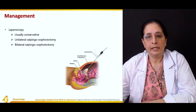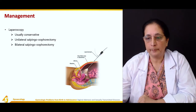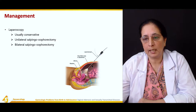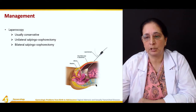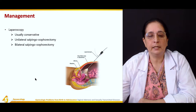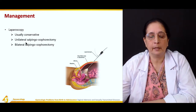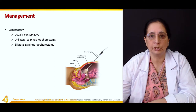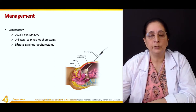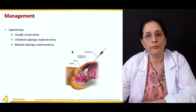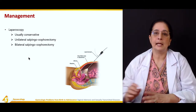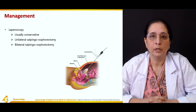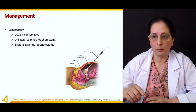Again regarding management, laparoscopy can be performed to visualize the inside structures, and usually the approach is conservative. Sometimes unilateral or bilateral salpingoophorectomy is performed, which involves removal of the fallopian tube and the ovary.